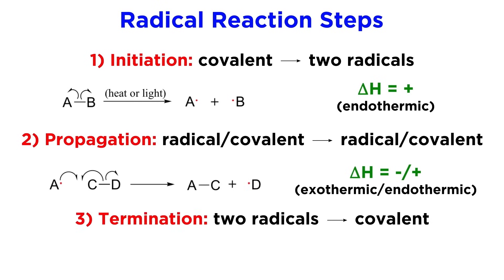Then the existence of radicals can end via a termination step. This is where two radicals meet and form a covalent bond, so we are going from two radicals to one covalent species. Because we are forming a bond, energy must be released. So termination steps are always exothermic, and will have a negative delta H.